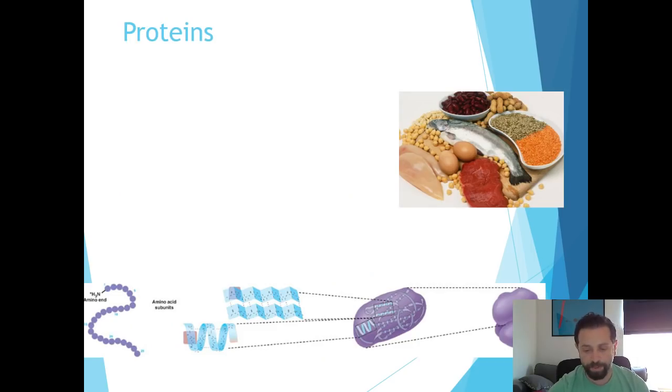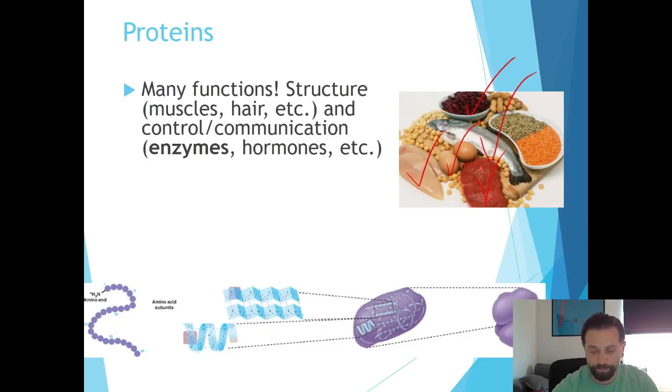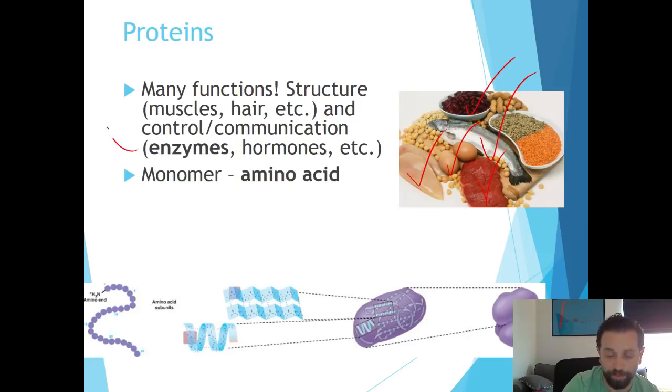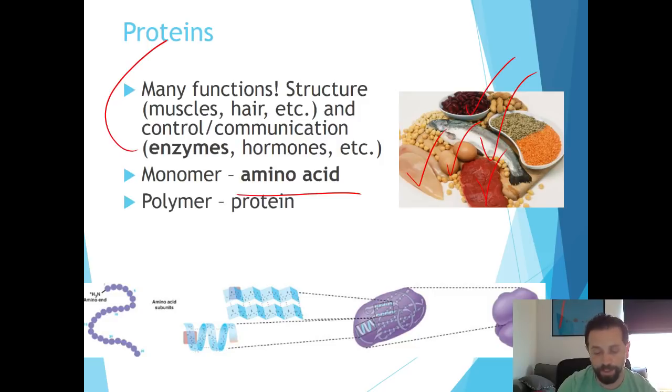Next: proteins. Where would you get proteins? Here are some examples: you got beans, nuts, eggs, chicken, looks like beef, fish, lots of different examples. Many functions—proteins basically make up our muscles, our hair, and actually make up our enzymes and hormones. Now remember, enzymes are protein based. The monomer for proteins is known as amino acid—that's the monomer. The polymer is basically called protein. That makes it easier to memorize. And there are four levels of structure for proteins, which in one of the other lectures Mr. Jones goes over. We'll have primary, secondary, and so on.